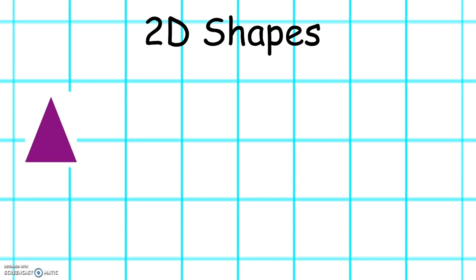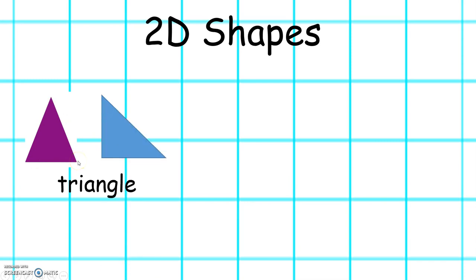This is a triangle. Triangles have 3 sides and 3 corners. Sometimes triangles look like this.